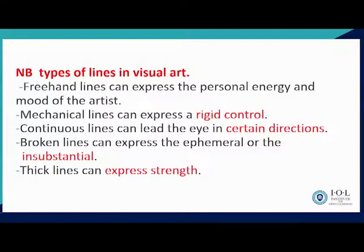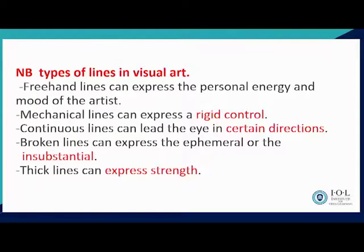What are the types of lines in visual art? We have freehand lines that can express the personal energy and mood of the artist. We have mechanical lines that can express rigid control. We have continuous lines that can lead the eye in a certain direction. Broken lines can express the ephemeral or the insubstantial. Thick lines can express strength — just as thick muscles evoke strength.